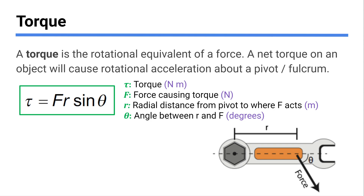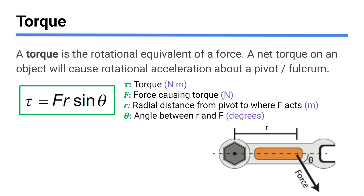This angle also matters. You're going to get the most torque if this angle is 90 degrees — that's the theta in the equation. Sine of 90 degrees is one, sine of zero degrees is zero, and that helps you understand what's going on physics-wise. If I exerted a force at zero degrees, I wouldn't cause any rotation or any torque. At 90 degrees I get a lot, and in the middle I get a medium amount.